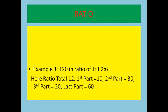Next example: 120 in the ratio of 1 is to 3 is to 2 is to 6. Adding up: 1 plus 3 plus 2 plus 6 equals 12 parts. So 120 is to be divided into 12 parts.